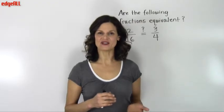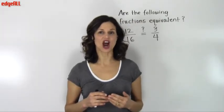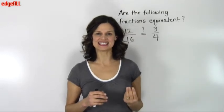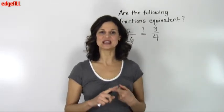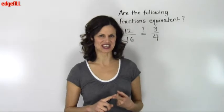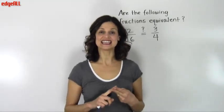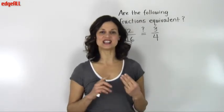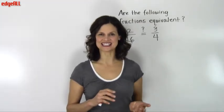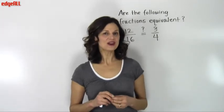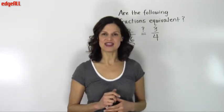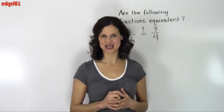You can find out if two fractions are equivalent by three different methods. The first is using cross multiplication. The second is simplifying or reducing the fractions. And the third is making the denominators of the two fractions the same. We are going to learn the cross multiplication method in this video. Other methods are discussed in other videos.